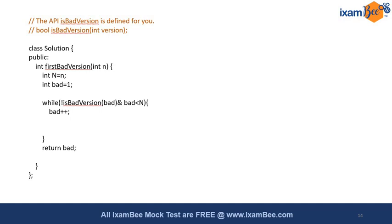I have made one extra method called firstBadVersion, which is going to return the first bad version. You have the number of versions in your parameter list represented as int n. You take a local variable to store the number of versions, then initialize bad equal to one, assuming that the bad version is actually bad.